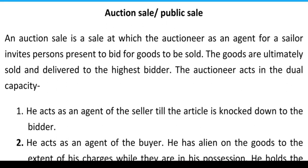जैसे normal sale में seller और buyer दो व्यक्ति होती हैं, वैसे ही auction sale में भी seller और buyer होते हैं — बस फर्क उतना होता है कि यहाँ buyer ज़्यादा होते हैं जो बोली लगाते हैं। जैसे किसी ने 1000 बोला तो कोई 1500 रुपये बोलेगा — और जो भी highest bid लगाएगा उस buyer को वो goods बेच जाती हैं। Seller के behalf में या buyer के behalf में काम करने वाले middleman को auctioneer कहते हैं।